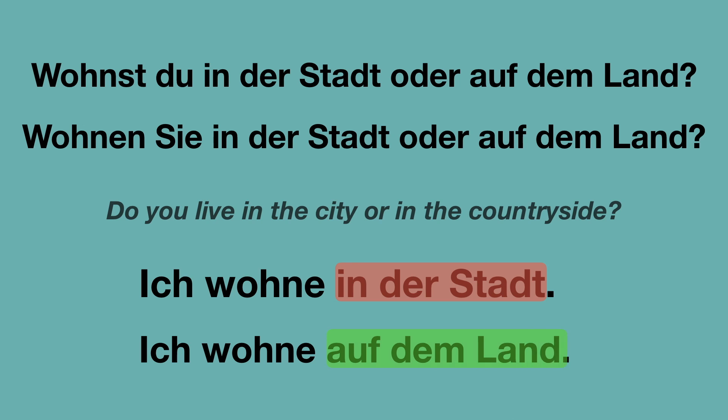You might have a question: why it's 'in der Stadt' and why it's 'auf dem Land'. At this point I would recommend you to memorize them as chunks. So memorize them as: in der Stadt, auf dem Land.